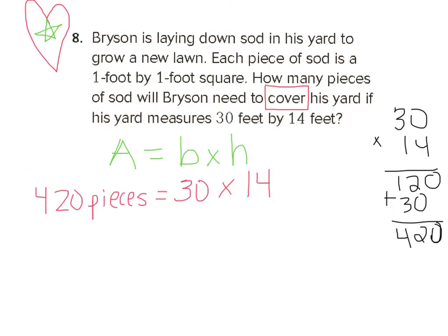Alright boys and girls, so this is how you should have worked this problem out. You should have done 30 times 14 gives you 420 pieces. Now, it tells you that each piece is 1 foot by 1 foot squared. But if you look right here, it's asking for each piece, okay? And it's asking for how many pieces of sod will Bryson need. But, they tell you that each piece is going to be 1 foot squared. So that's the same thing as saying 420 squared feet. Now, don't forget that over here on the side I showed you my work. And hopefully you have that written down as well.